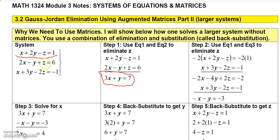Now I'm going to do this again, but this time using the first equation and the third equation to eliminate z. I'll have to manipulate the first equation — the third equation has negative 2z, so I can multiply everything in the first equation by negative 2. That gives me negative 2x minus 4y plus 2z equals negative 2. Adding to the third equation: negative 2x plus x is negative x, negative 4y plus 3y is negative y, z's cancel, and negative 2 plus negative 1 is negative 3.